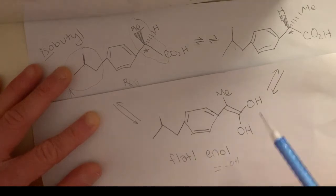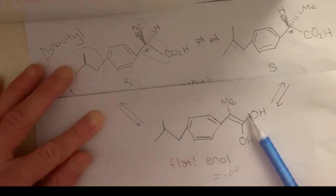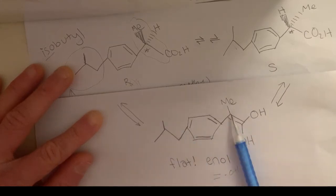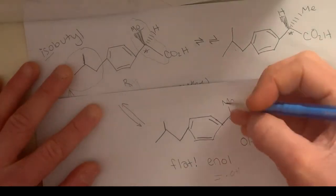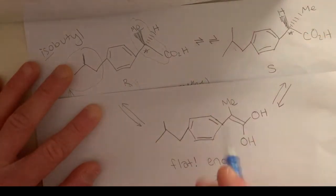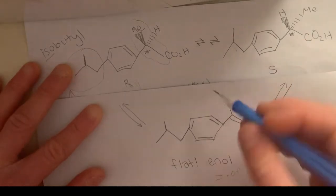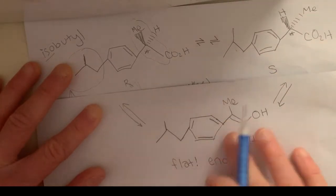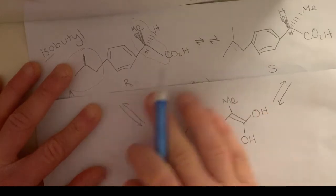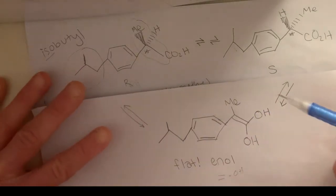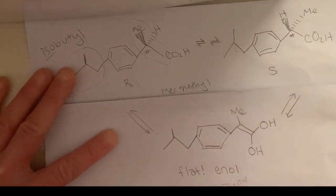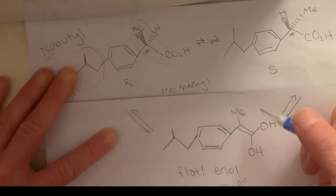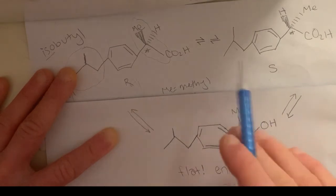And why this is important is because this is flat. So you can see everything's, this is all in the plane of the paper, including this methyl group. So it's in the plane of the paper because the molecules want to try to separate all the different groups as far as possible. And so when it does this, it puts the methyl in the plane with these.